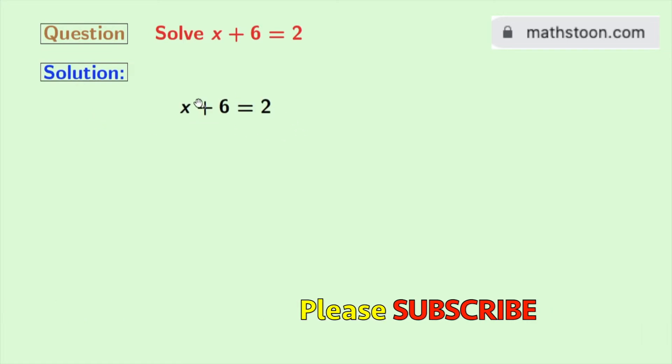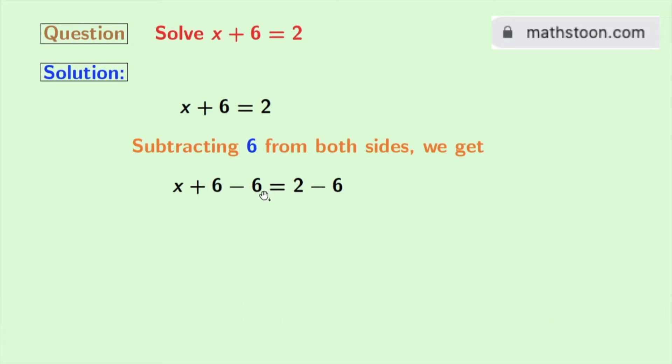This is our given equation. Now to get the value of x, we will subtract 6 from both sides. Doing so, we get x plus 6 minus 6 is equal to 2 minus 6.